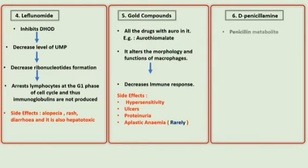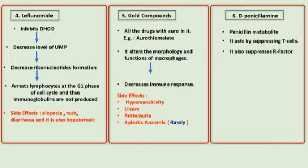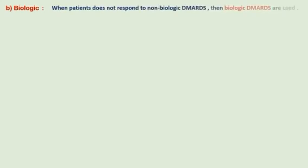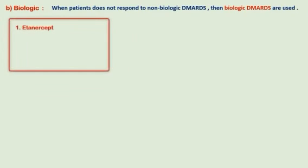Next are disease-modifying anti-osteoarthritis drugs. Osteoarthritis is treated by NSAIDs, but these drugs do not erase disease progression or joint destruction. Recently, two compounds have been developed: diacerein, which is an IL-1 antagonist, and aceclofenac, which is a combined COX-LOX inhibitor. These two compounds have been developed to slow the progression of osteoarthritis.